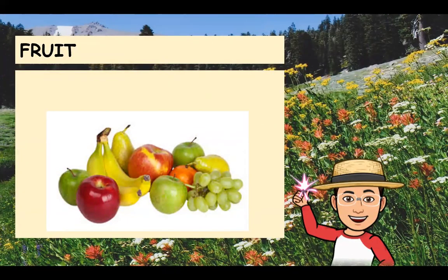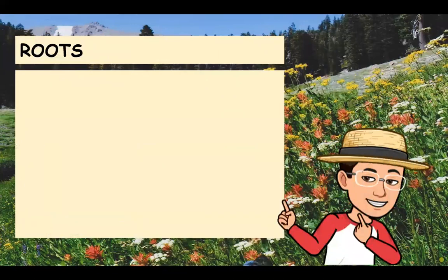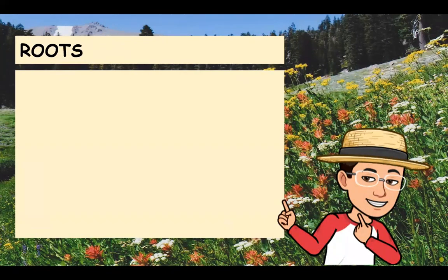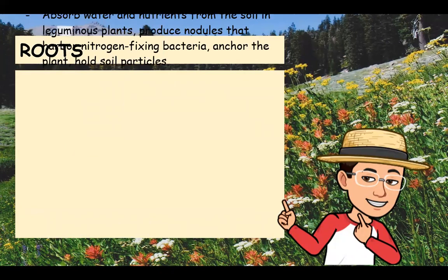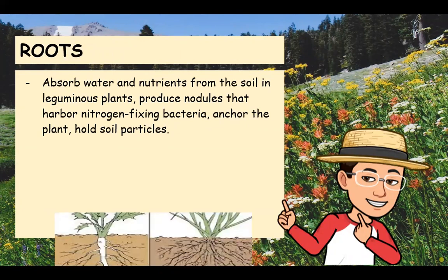Next is fruit. Fruit is actually the developed, matured ovary. It contains the seed and most fruits are fleshy and edible. The last part of the plant is the roots, which grow below the ground. Different plants have different roots. A plant may either have a fibrous or a taproot system. The fibrous root system is composed of many fiber-like structures, while the taproot system has a main root from which other roots arise, developing a very deep root system.